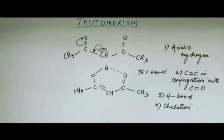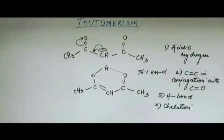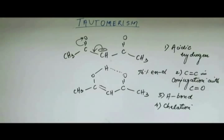Why ring formation provides stability — we will see that later, as it comes under coordination compounds. But for now, hold on to this fact: when you have ring formation, stability is provided to the substrate. So the fourth factor for why enol should be more stable is chelation.